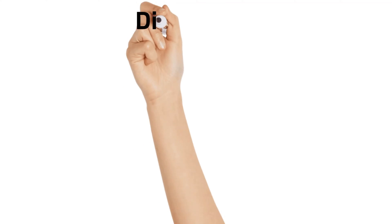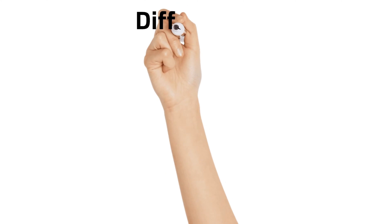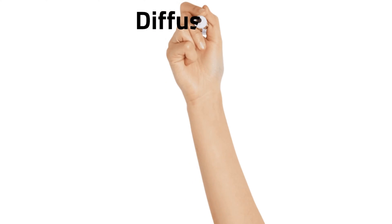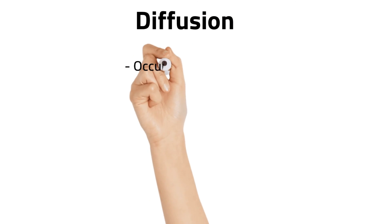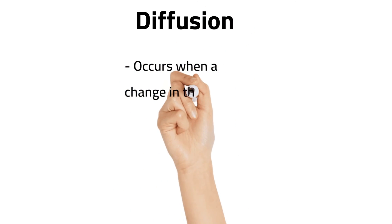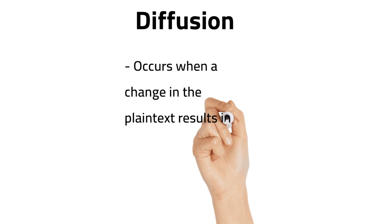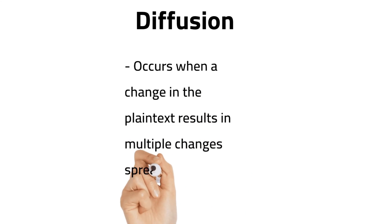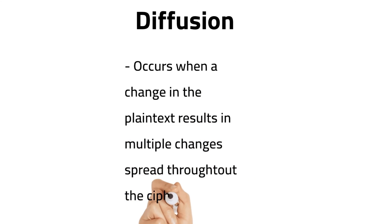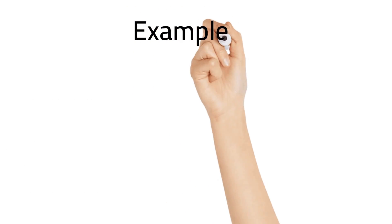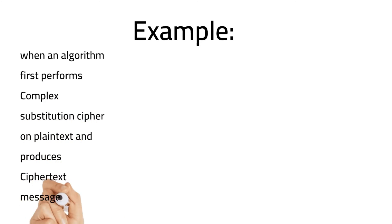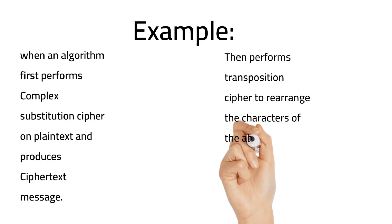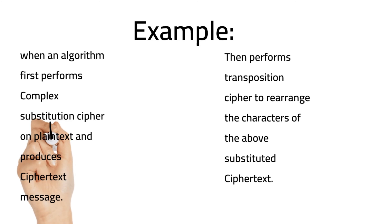What is diffusion? Diffusion occurs when there is a change in the plain text which creates multiple changes in the resulting cipher text — it spreads throughout the cipher text. For example, when a cryptographic algorithm performs a substitution cipher on the plain text and produces the cipher text message.